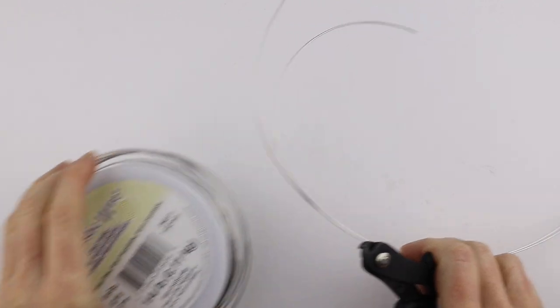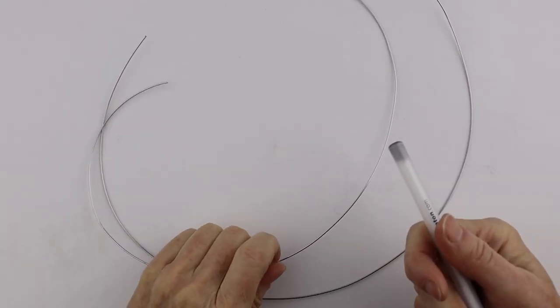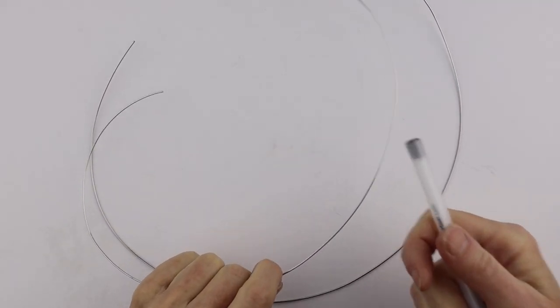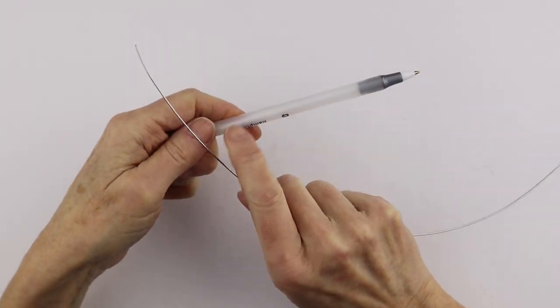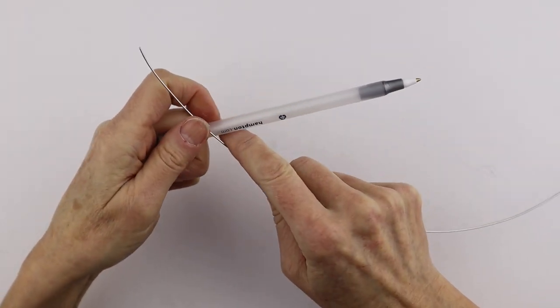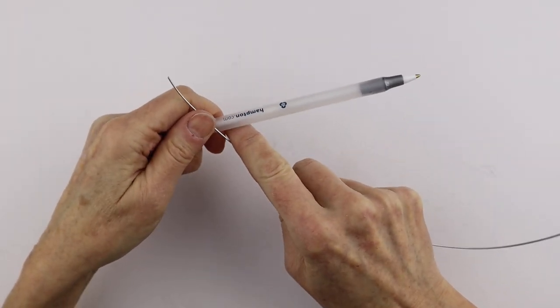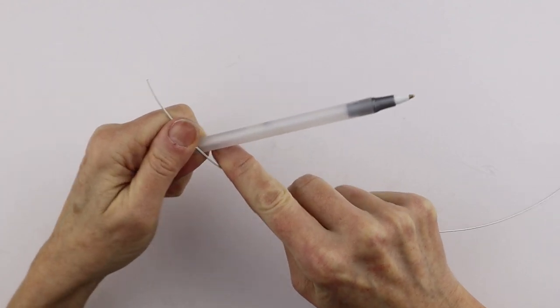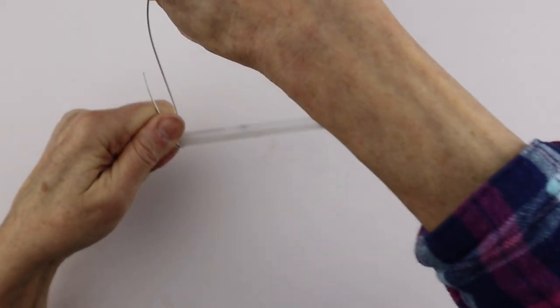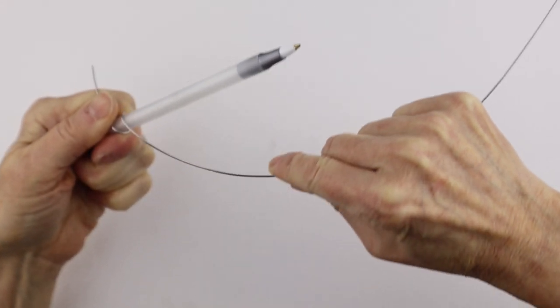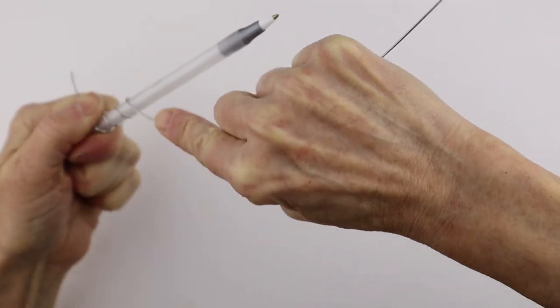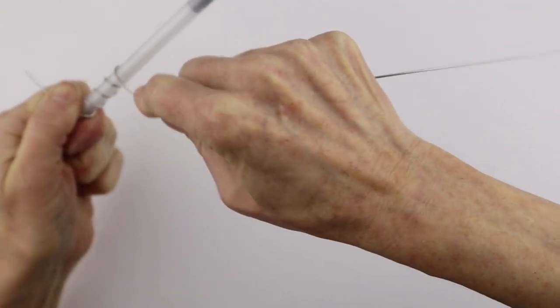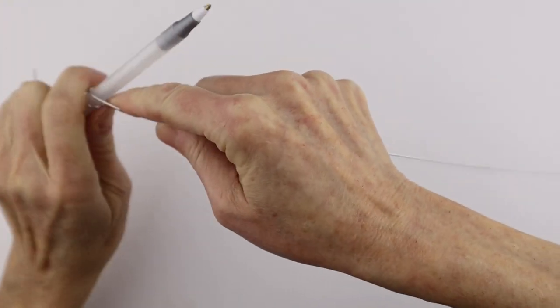I'm going to wind the wire around a pen. Straighten out the wire a little bit. We're going to start on one side and go one direction. Hold this in place, you can leave a little extra on the end, and just wind it.